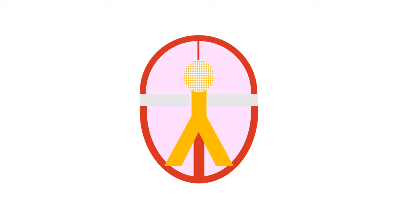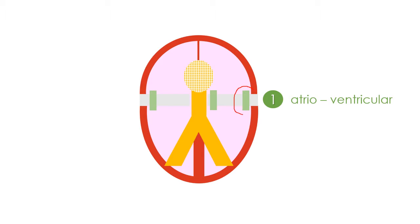First, we have what we call the atrioventricular accessory pathways that can be located in the left or in the right atrioventricular groove, or paraseptally.